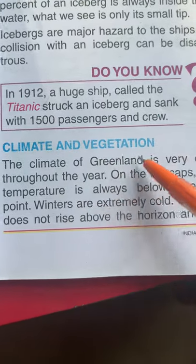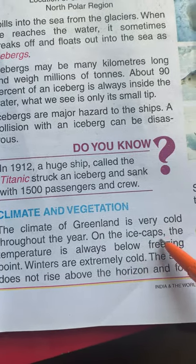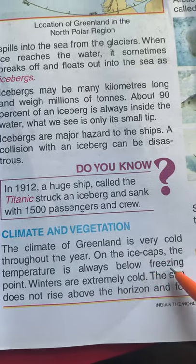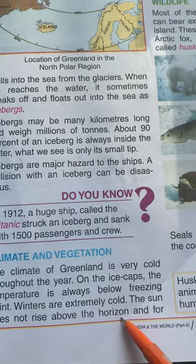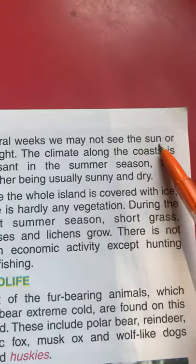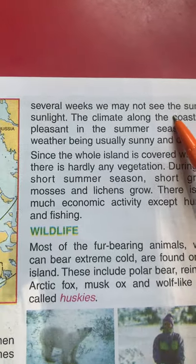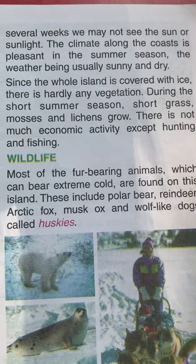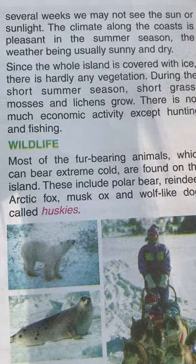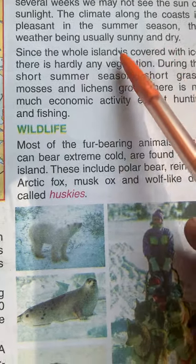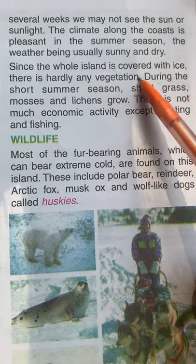Let us see the climate and vegetation of Greenland. The climate is cold throughout the year. On the ice caps, the temperature is always below freezing point. Winters are extremely cold — the sun does not rise above the horizon, and for several weeks we may not see the sun at all. But the climate along the coast is more pleasant, usually sunny and dry, though the whole island is otherwise covered with ice.